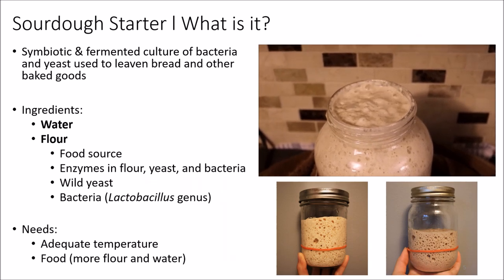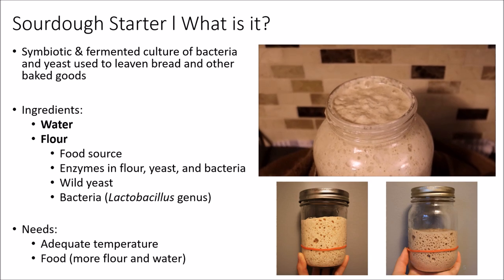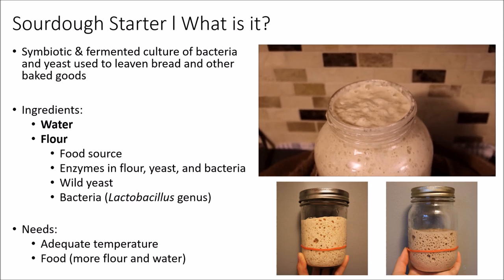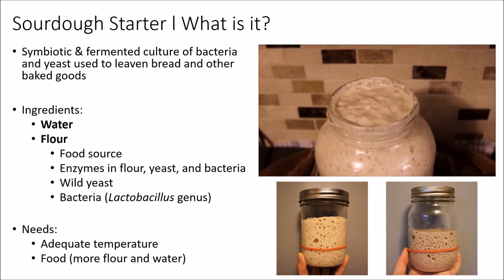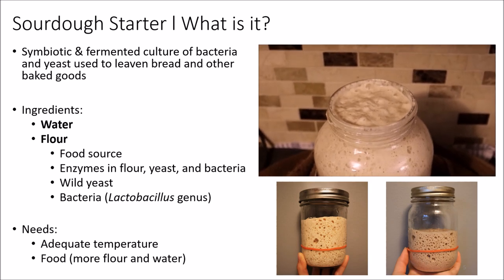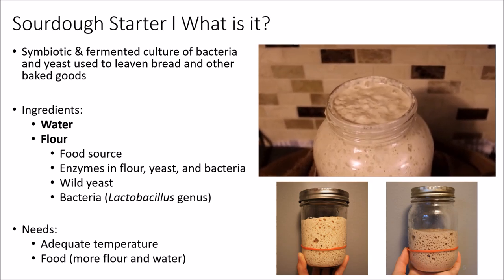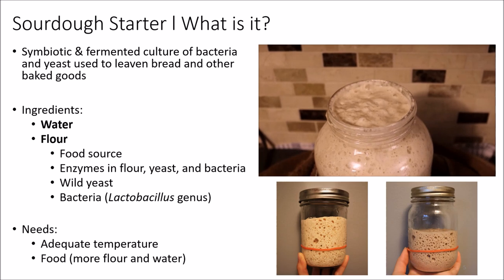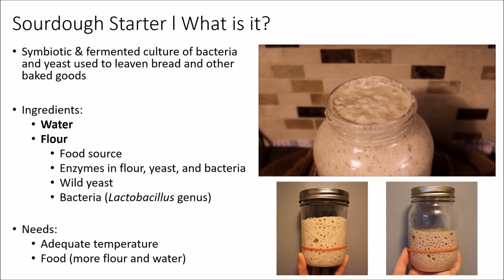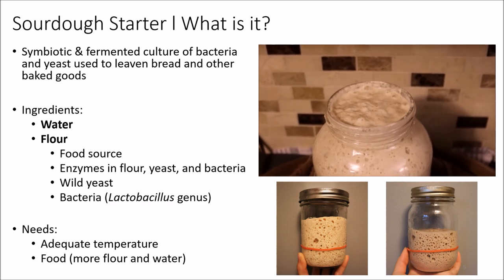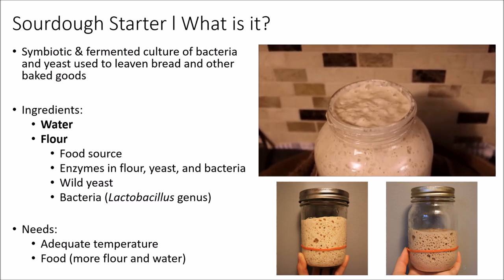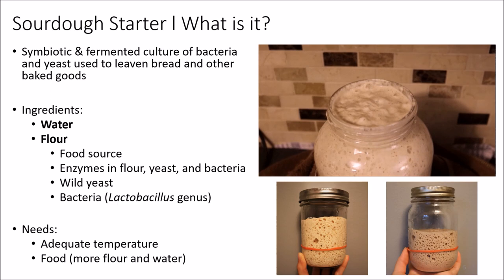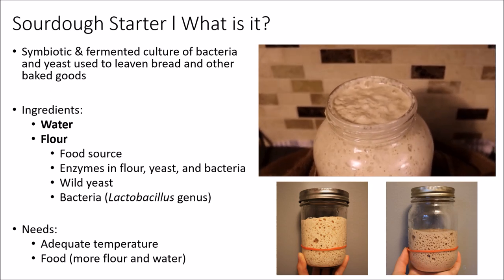A sourdough starter is a symbiotic and fermented culture of bacteria and yeast used to leaven bread and other baked goods. It's simply made from mixing flour and water together, but it's more complex than that — the flour itself is a food source for wild yeast and bacteria, and it also contains enzymes. Those enzymes help break down the degraded starches and gluten, which feeds the populations of wild yeast and bacteria, allowing them to thrive in the starter.